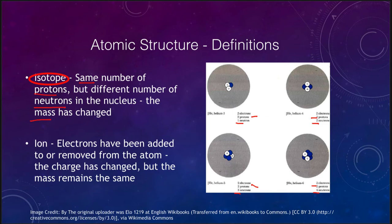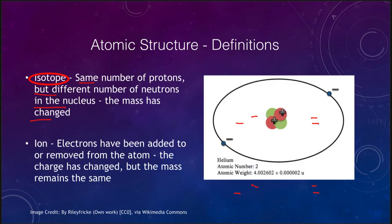Now an ion on the other hand is when you change the electrons. So electrons are added or removed from the atom. When you change those, then we change the charge. The charge has changed but the mass is still exactly the same.